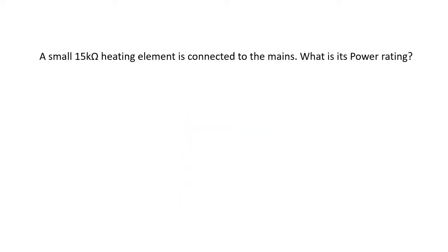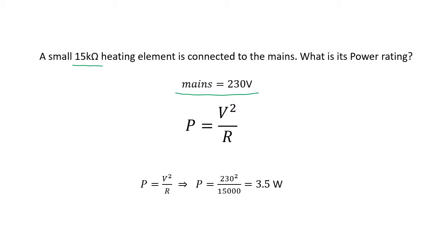Revisiting the 15 kilohm mains example: since we know V = 230 V and R = 15 kΩ, we can use P = V²/R directly, arriving at 3.5 watts much faster than using P = IV. Learning all three equations saves time in the exam — any time saved is a good thing.